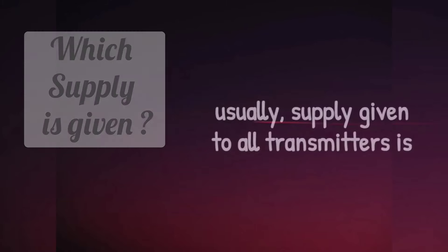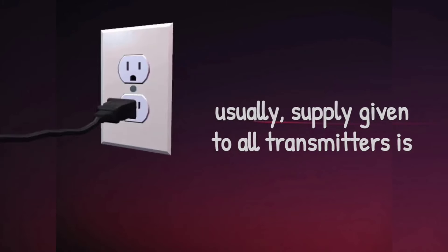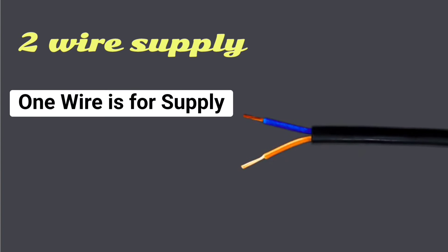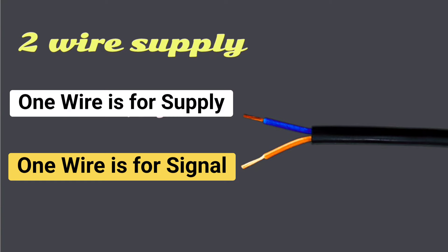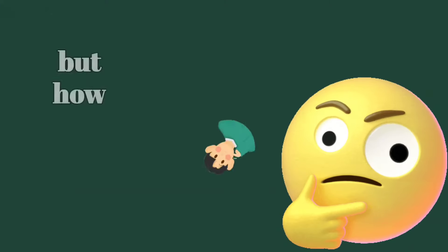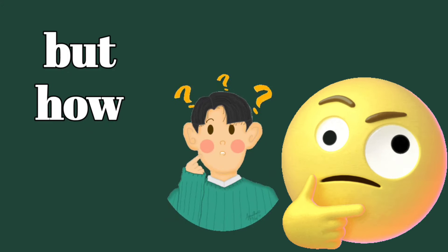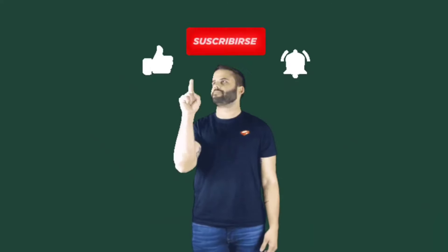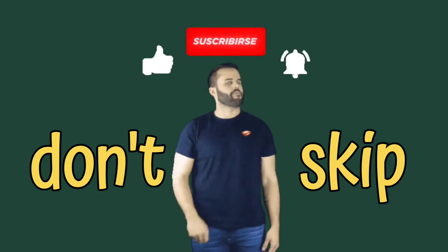Usually, the supply given to transmitters is 24V DC supply and this supply is 2-wire supply. In this supply, there is 1 wire for supply and 1 wire is for signal. But how? This is what we are going to discuss in today's video. The video is going to be very helpful for you people. Do not skip the video at all.